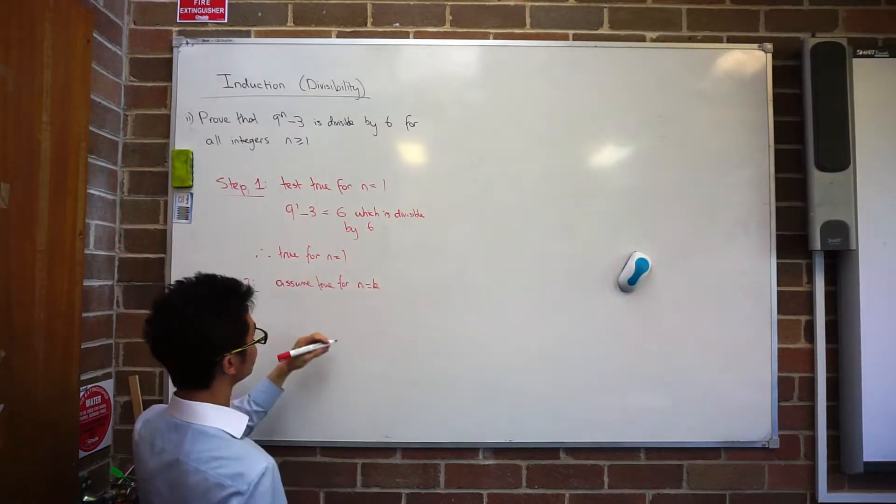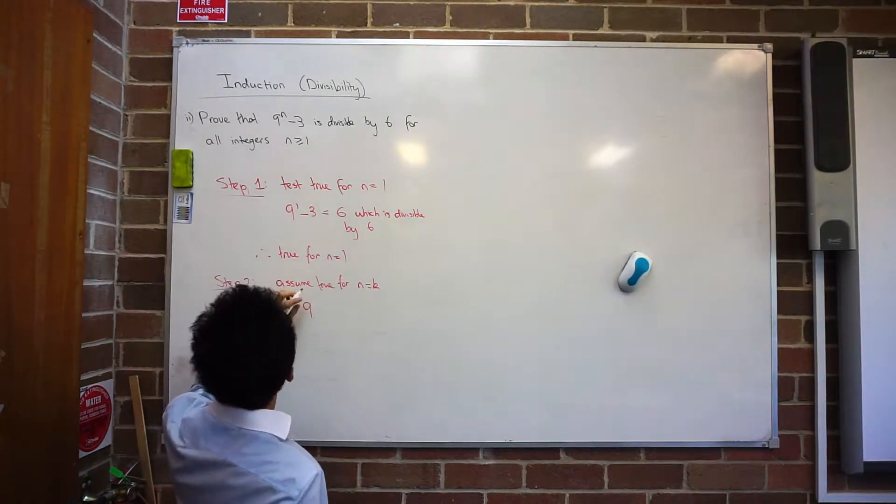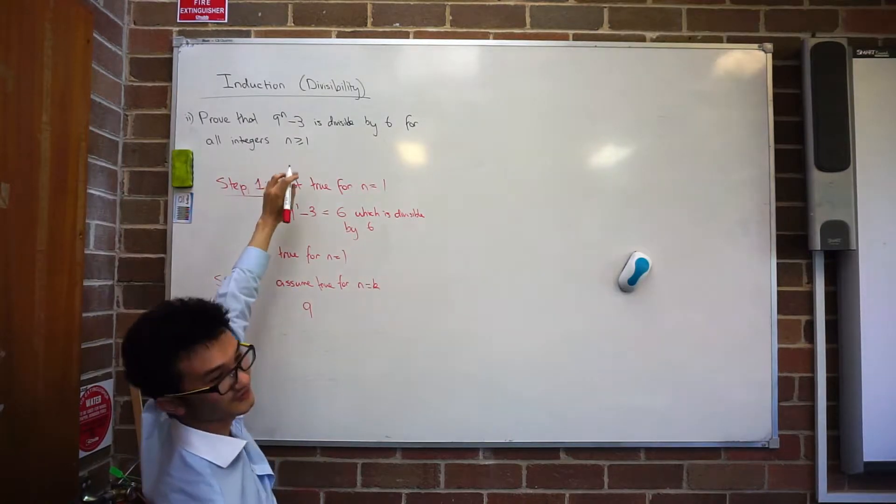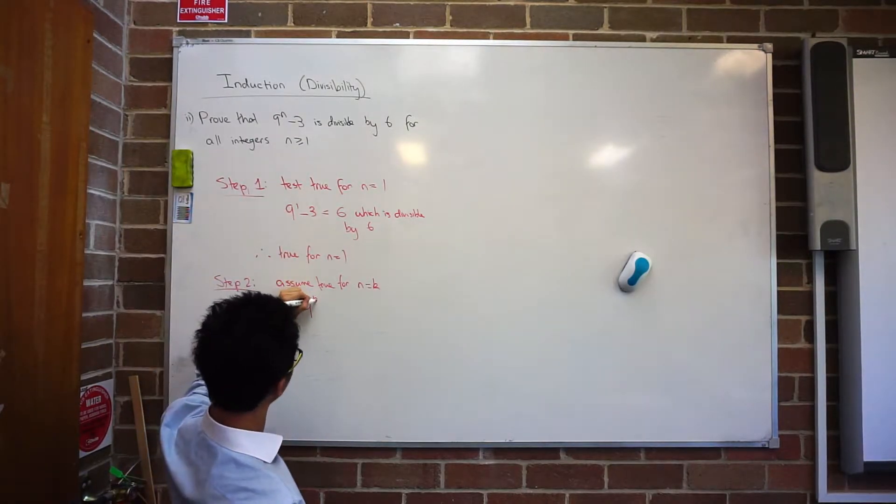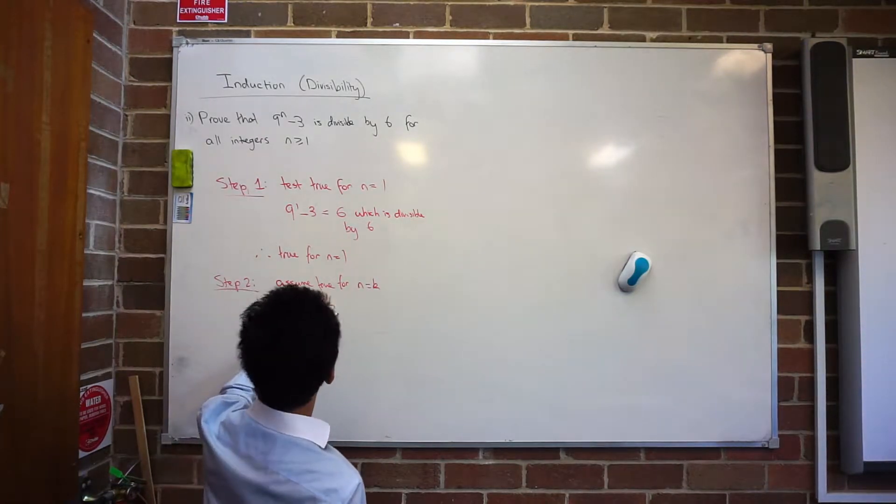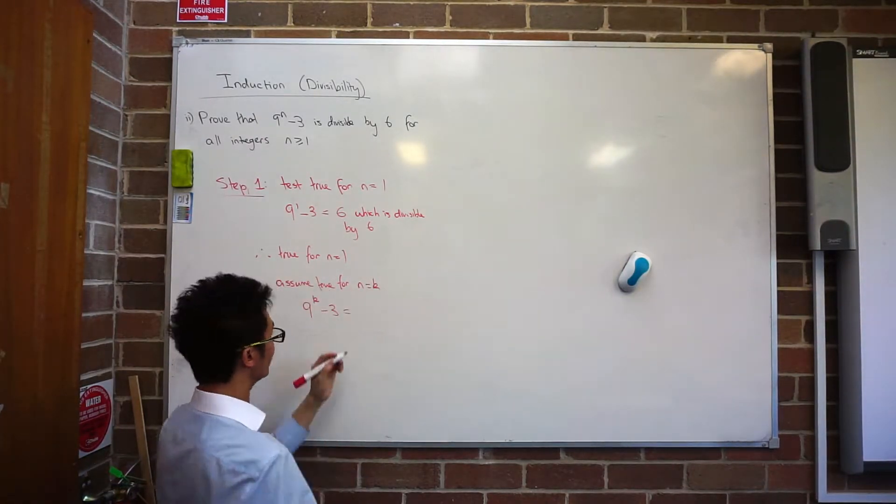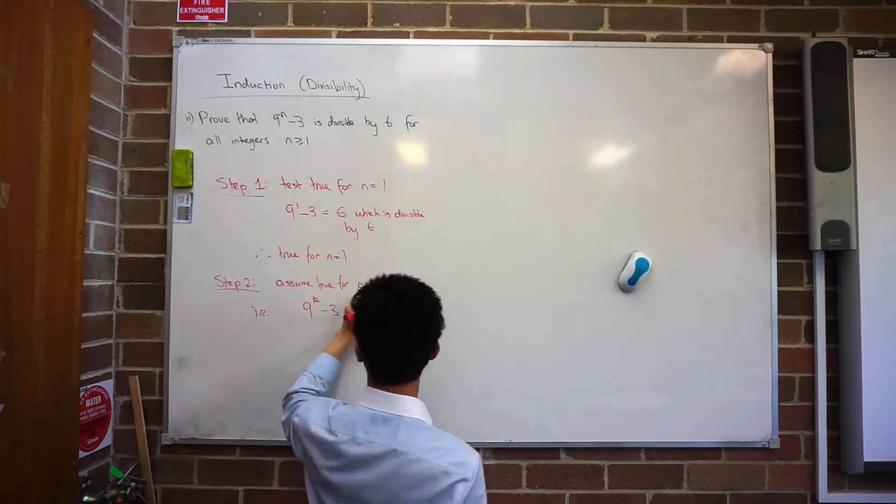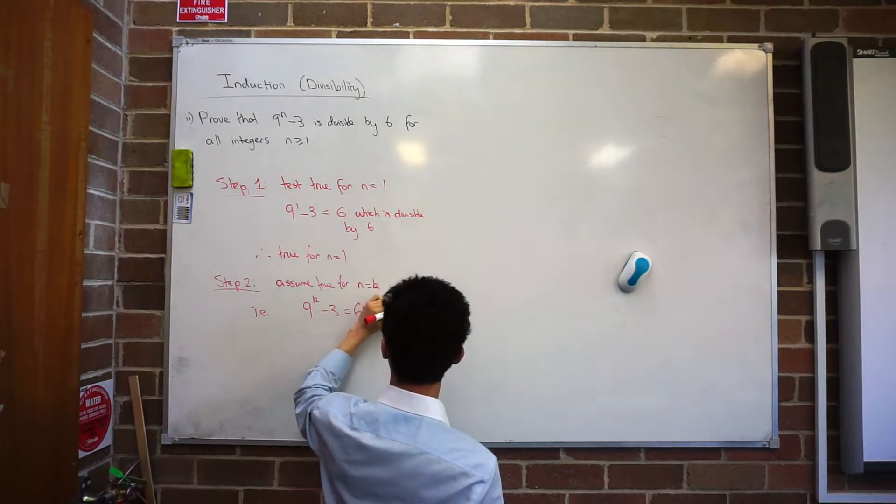And then what did you write next? So 9 to the k minus 3 equals 6m. And what is m? Where m is an integer. Good. Really important that you specify that.